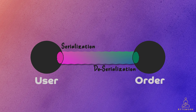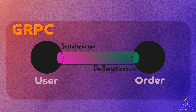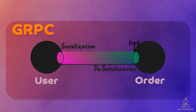The serialization and deserialization of data are automatically handled by the gRPC framework. When sending a message from one microservice to another, gRPC takes care of serializing the message into binary format and deserializing it on the receiving end. Developers do not need to write explicit code for serialization and deserialization. The gRPC framework also handles communication between microservices — the server-side microservice exposes the defined RPC methods, and the client-side microservice invokes those methods.